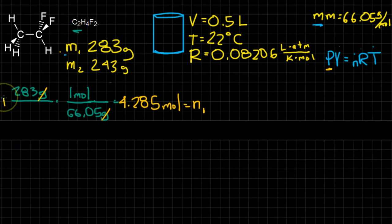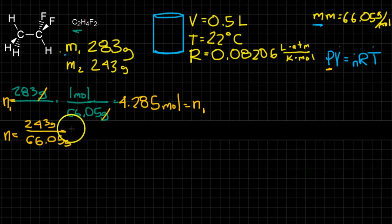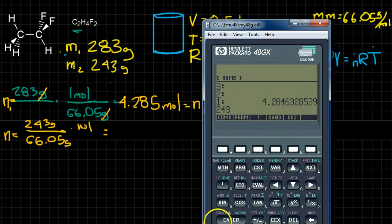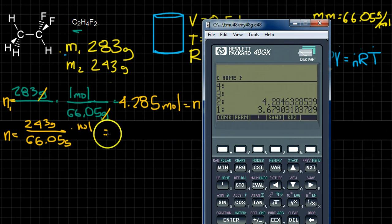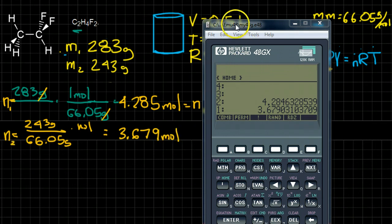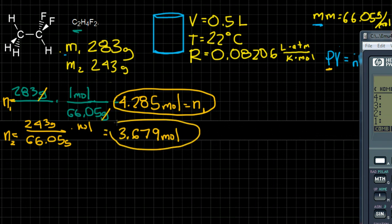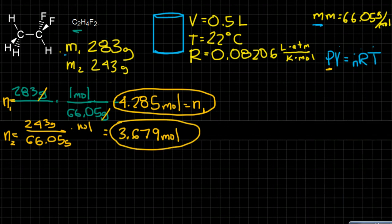That's my N1, because we're going to run this equation twice. Now N2, we're going to do it the same way. 243 grams divided by 66.05 times a mole equals 3.679 moles. So that's my N2. I'm going to need both of those, so let's circle them or square them.